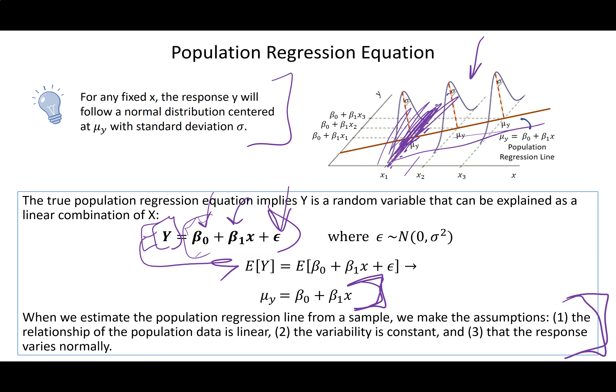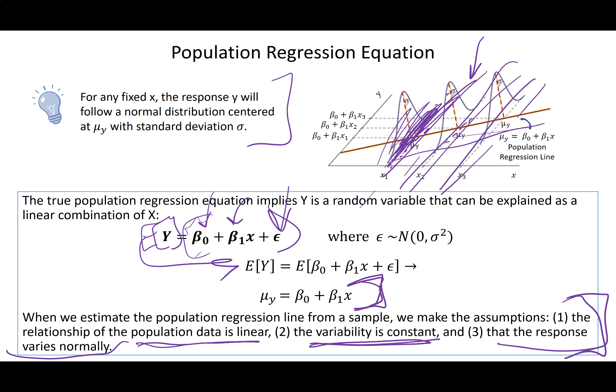For the least squares regression line to work effectively as a prediction model, we need four assumptions to be true. First, the data should have a linear relationship — don't fit a line to something curved. Second, variability is constant — wherever we slice, the variability is roughly the same. Third, the response varies normally. Fourth, independence. The idea is: at any slice, points are densest near the line and less dense further away.